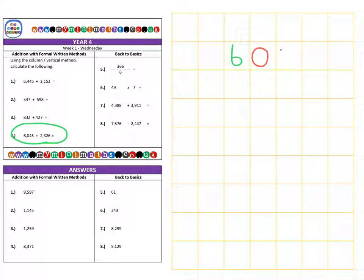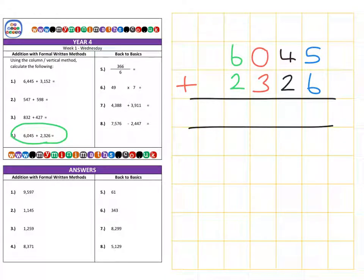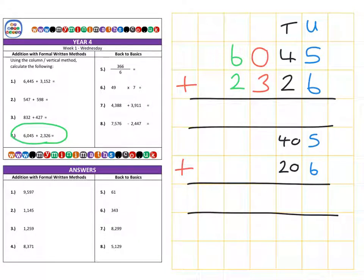And on to the final question for today which is 6,045 so there's no hundreds and 45. I'm going to add that to 2,326. OK so let's split this number up. First of all we have our units that's 5 units add 6 units. We're going to add the 4 tens and the 2 tens that's 40 add 20. In the hundreds there's no hundreds here, we have 300 below. And finally in the fourth column in the thousands column we have 6,000 added to 2,000.